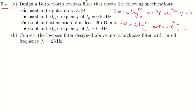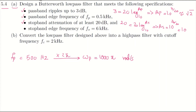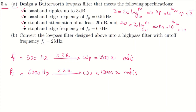The passband edge frequency is fp equals 500 Hz. To convert that to angular frequency, we multiply by 2π, so omega_p equals 1000π radians per second. Similarly, the stopband edge frequency is fs equals 6000 Hz, which converts to omega_s equals 12,000π radians per second. So these are the specifications of the filter we need.